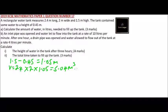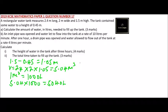Part B: an inlet pipe was opened and water allowed to flow into the tank at a rate of 10 liters per minute. After one hour, a drain pipe was opened and water allowed to flow out at a rate of 4 liters per minute. Calculate the height of the water in the tank after three hours. Let's find the amount of water that was in the tank initially when the height was 0.45 meters.